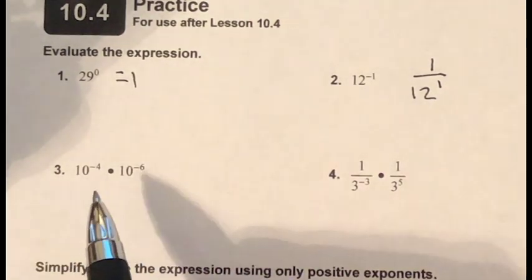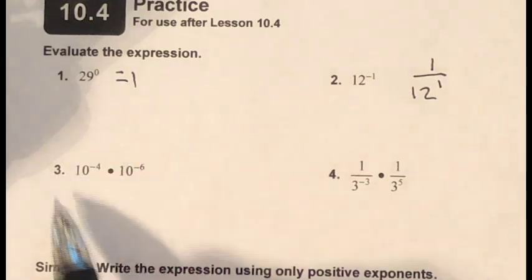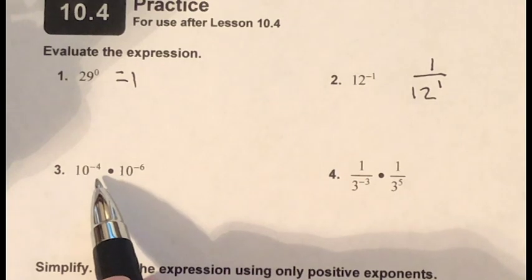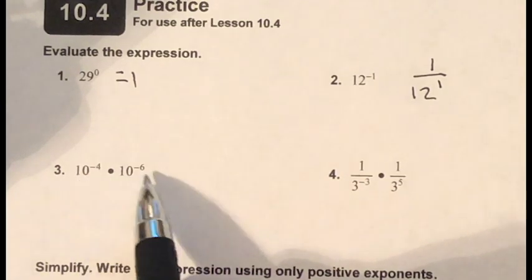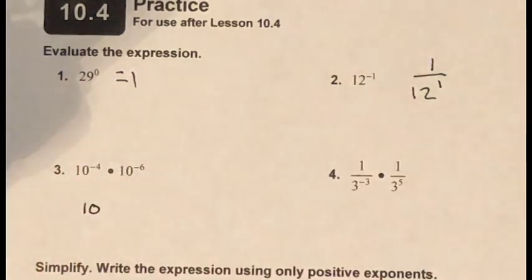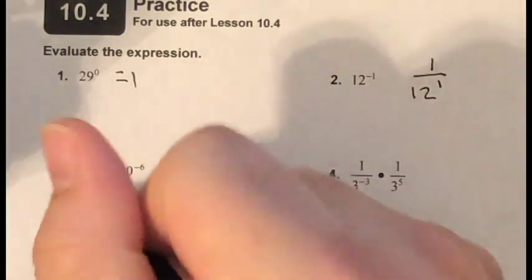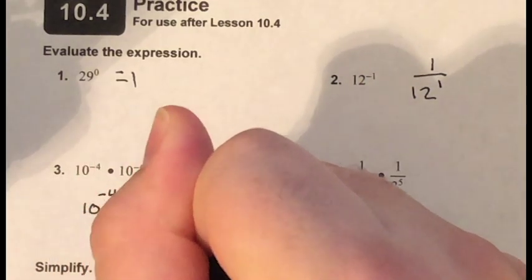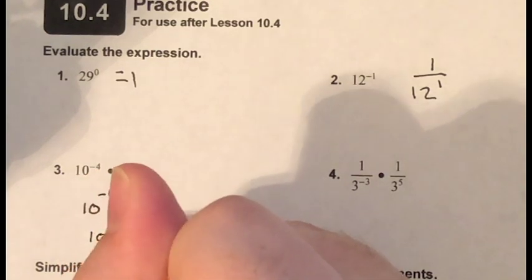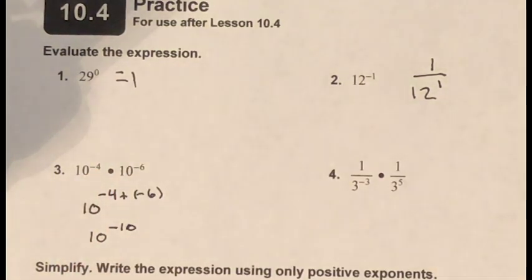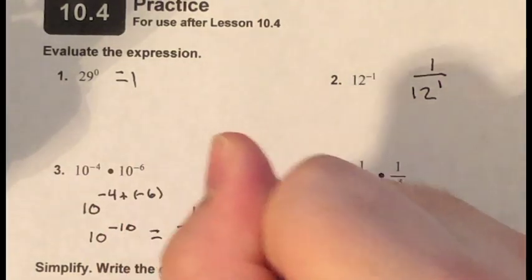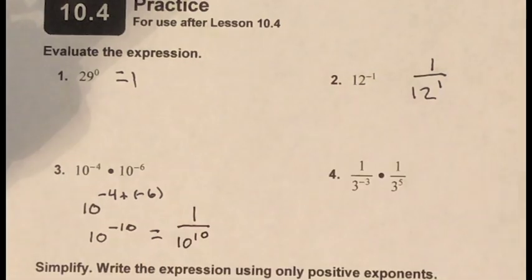Problem three: this still follows the same rules. When multiplying powers with the same base, I add exponents. My base is 10, and I add negative four plus negative six to get 10 to the negative ten power. Because I have a negative exponent, I rewrite it as a fraction: one over 10 to the tenth power.